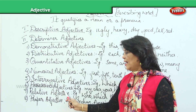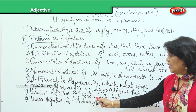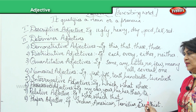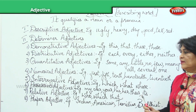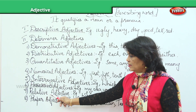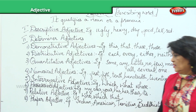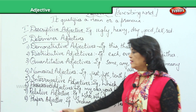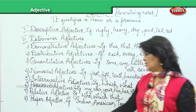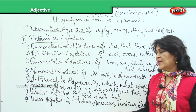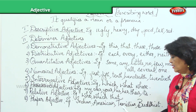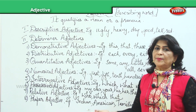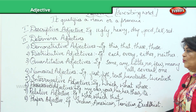Possessive adjectives: my, our, your, his, her, their, its. Next is relative adjectives — who, which, and that. And the last one: proper adjectives — these are proper nouns, that is why they are called proper adjectives. Indian, American, Tamilian, and Buddhist — all these are proper nouns that can describe a person, so they are called proper adjectives.